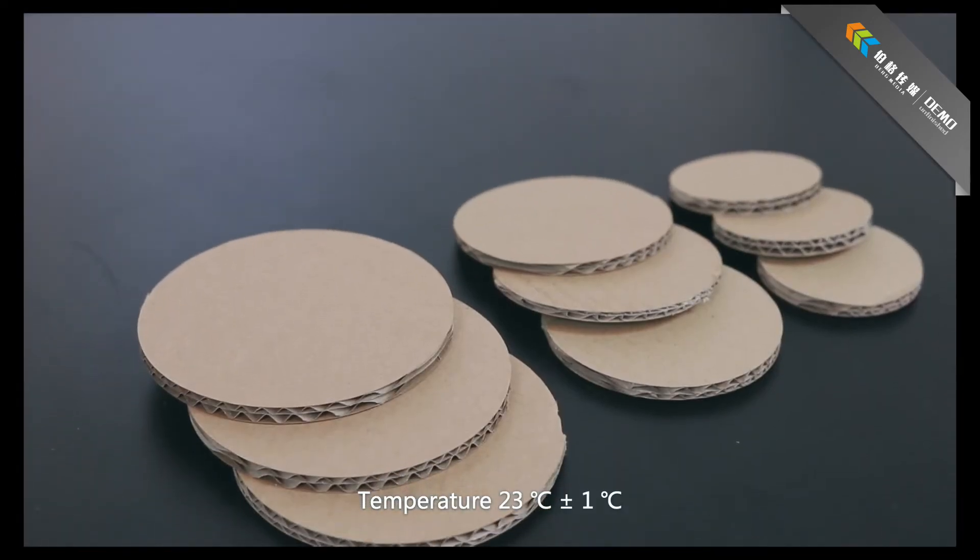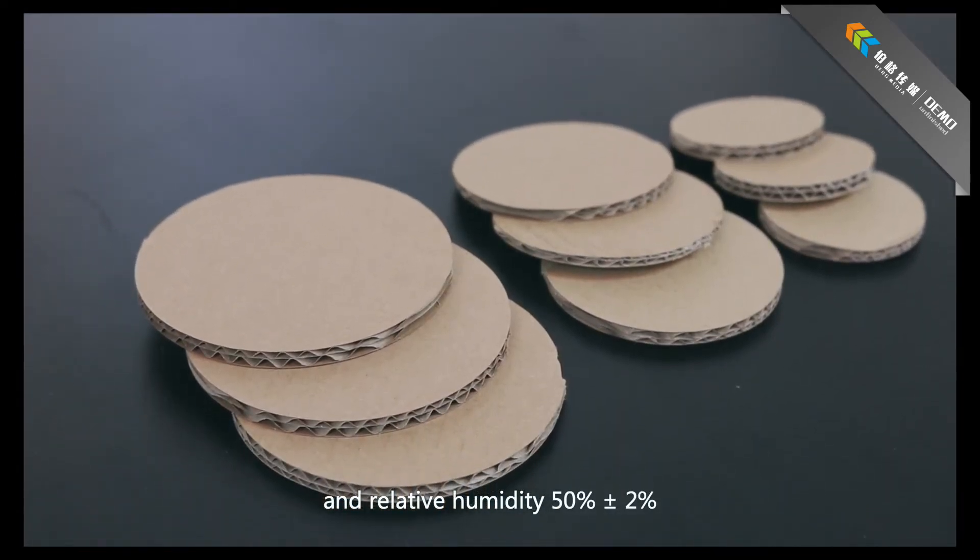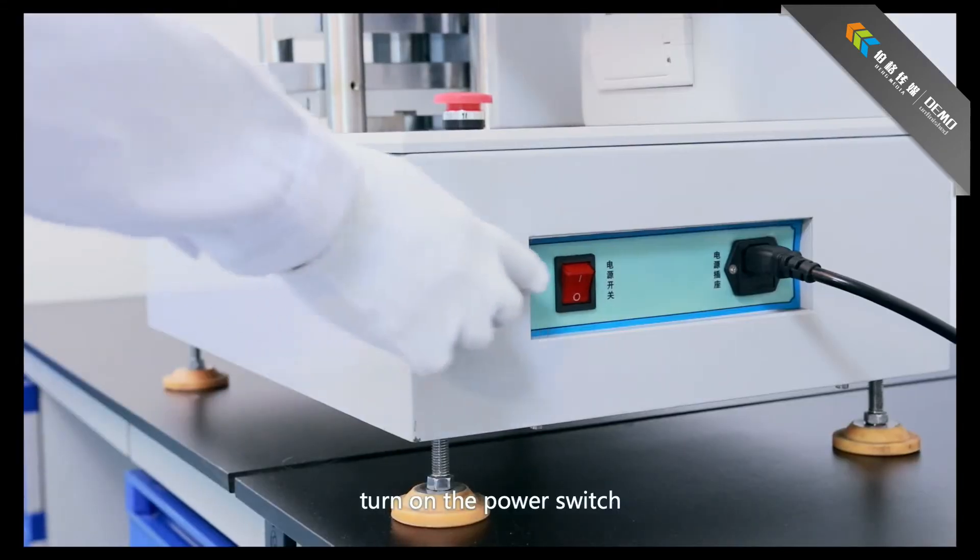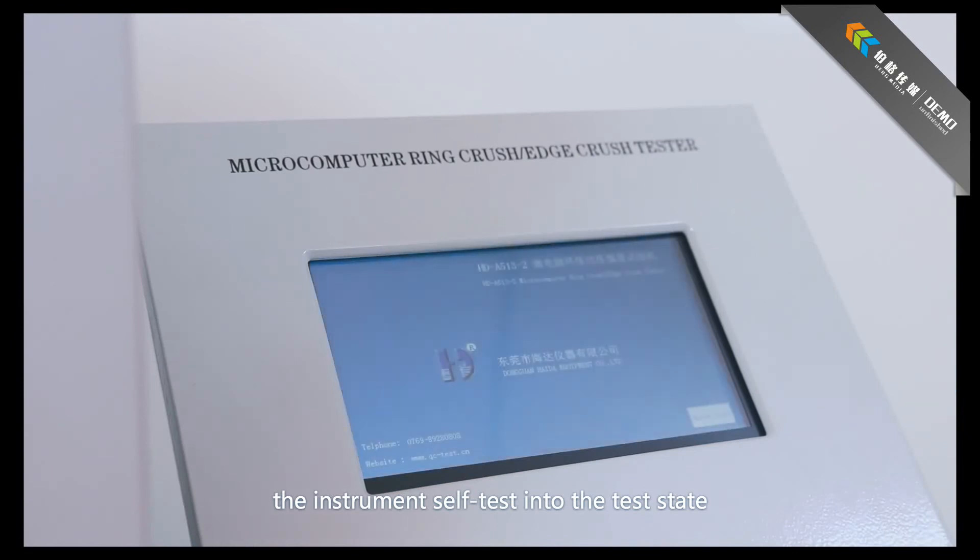Temperature 23 degrees and relative humidity 50%. Connect to the supply. Turn on the power switch. The instrument self-test into steady state.